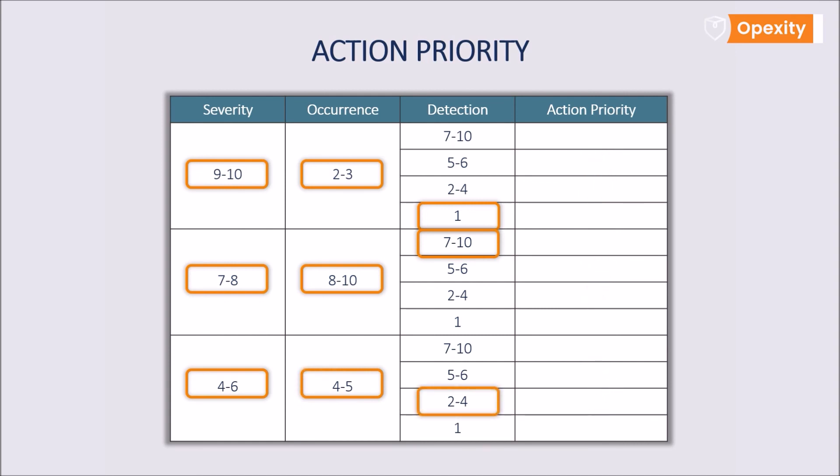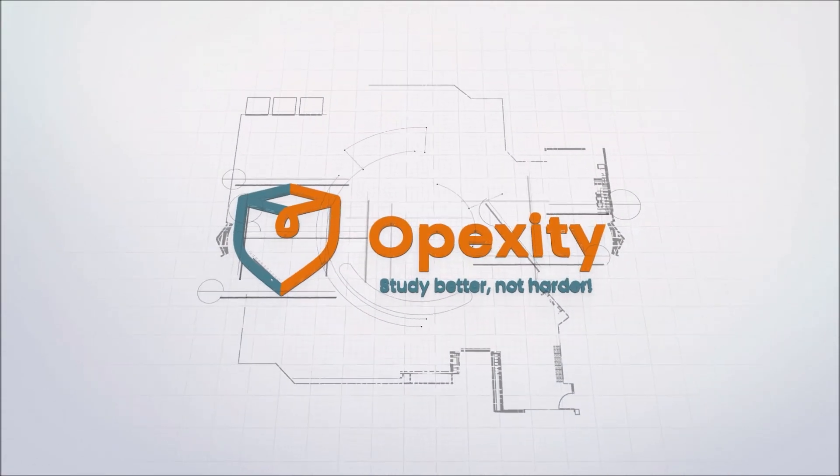Would you agree with me that rejecting a risk priority number and shifting into an action priority is a revolutionary idea with regard to the FMEA approach? Thank you.